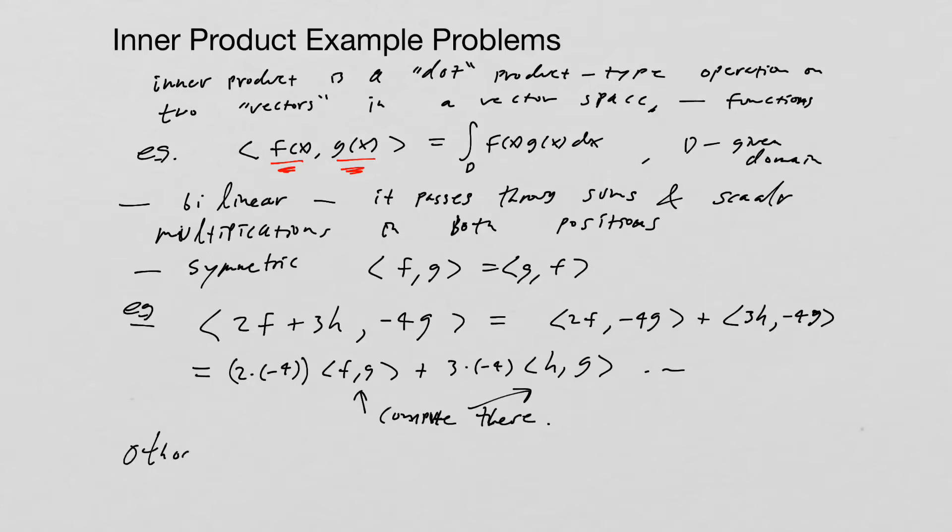We also have the property of orthogonality, that f comma g is equal to 0 implies then that f and g are orthogonal to each other. So orthogonality is a property that comes between any two pairs of functions—either they are orthogonal or not. Let's just do a few example problems that could show up on an exam or something like that.